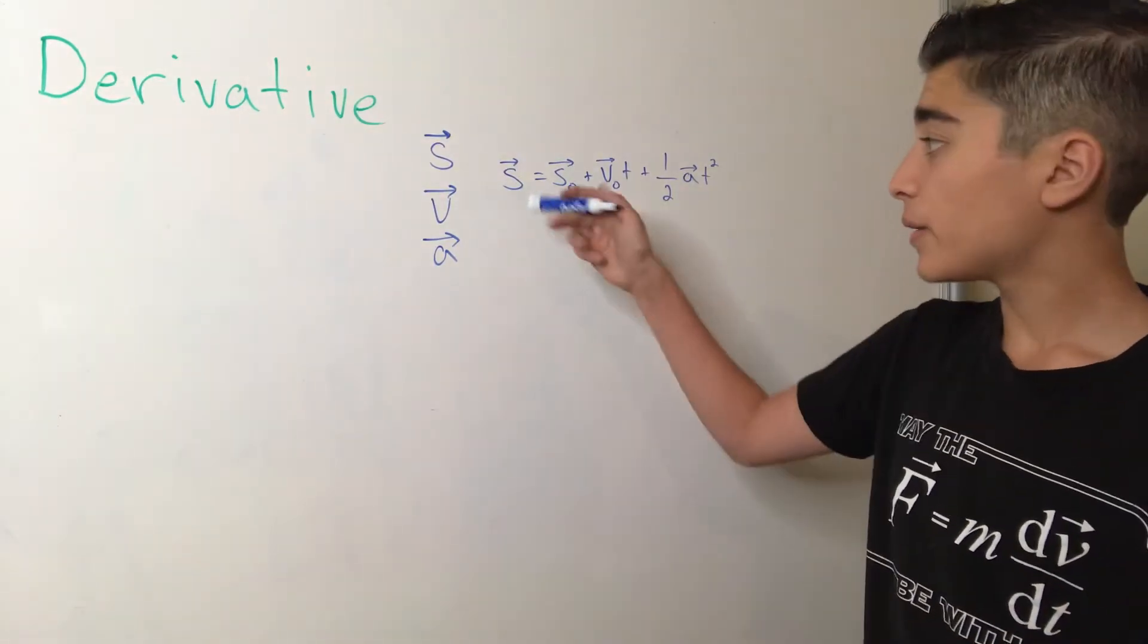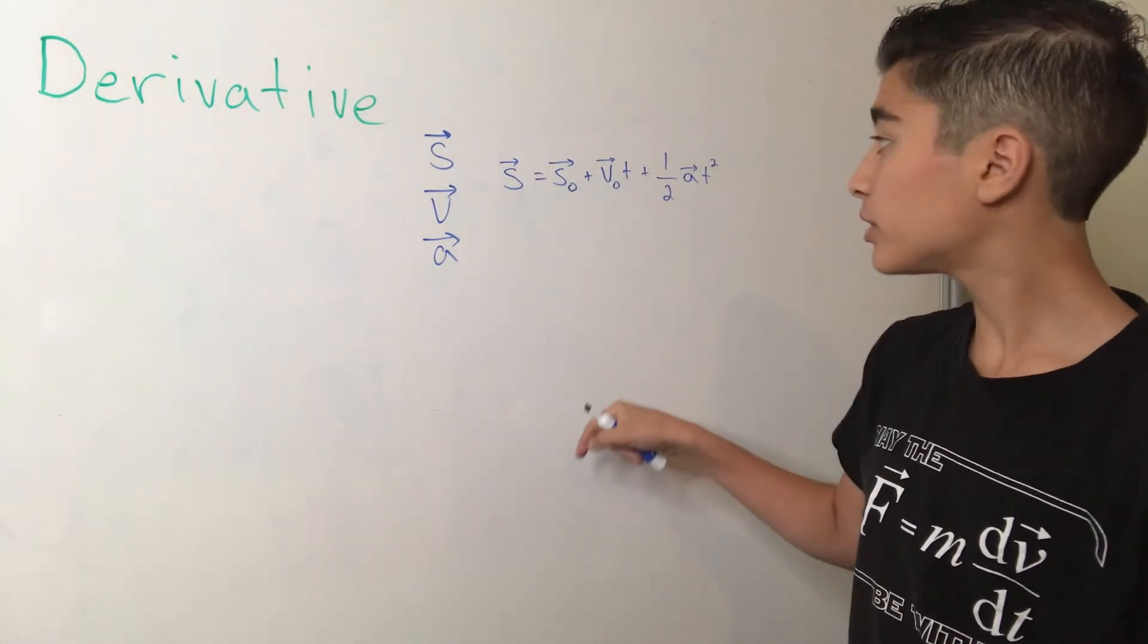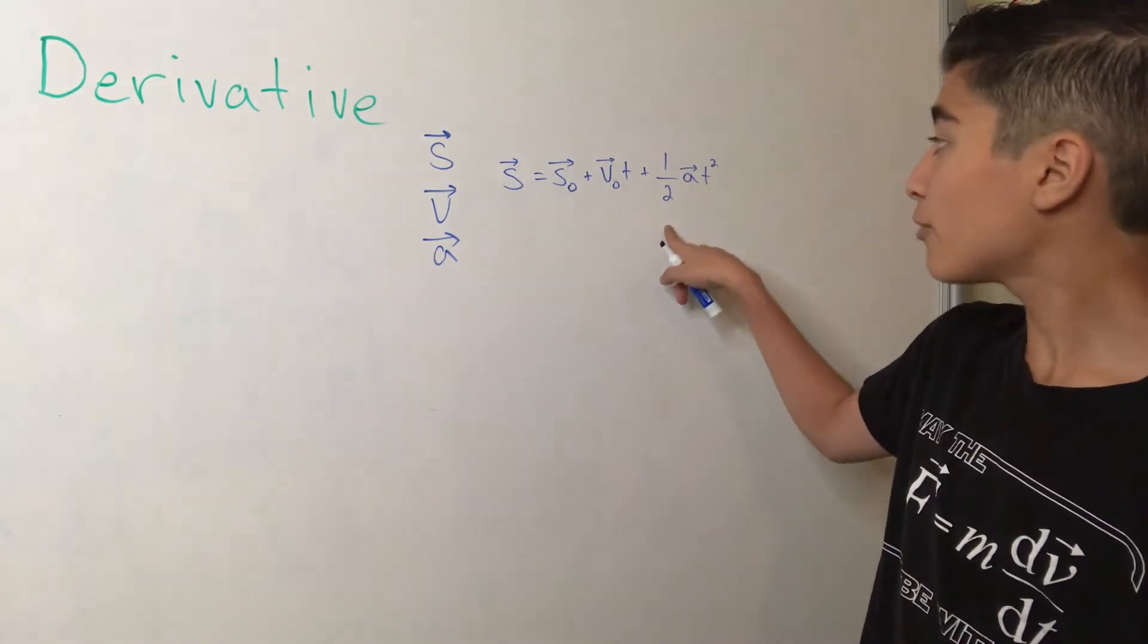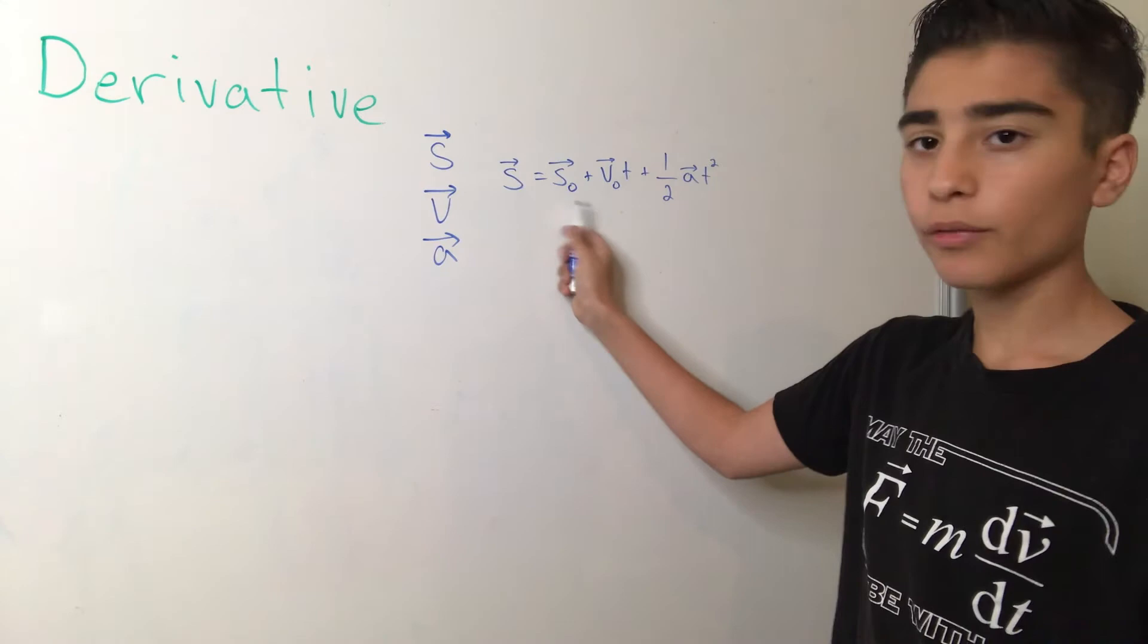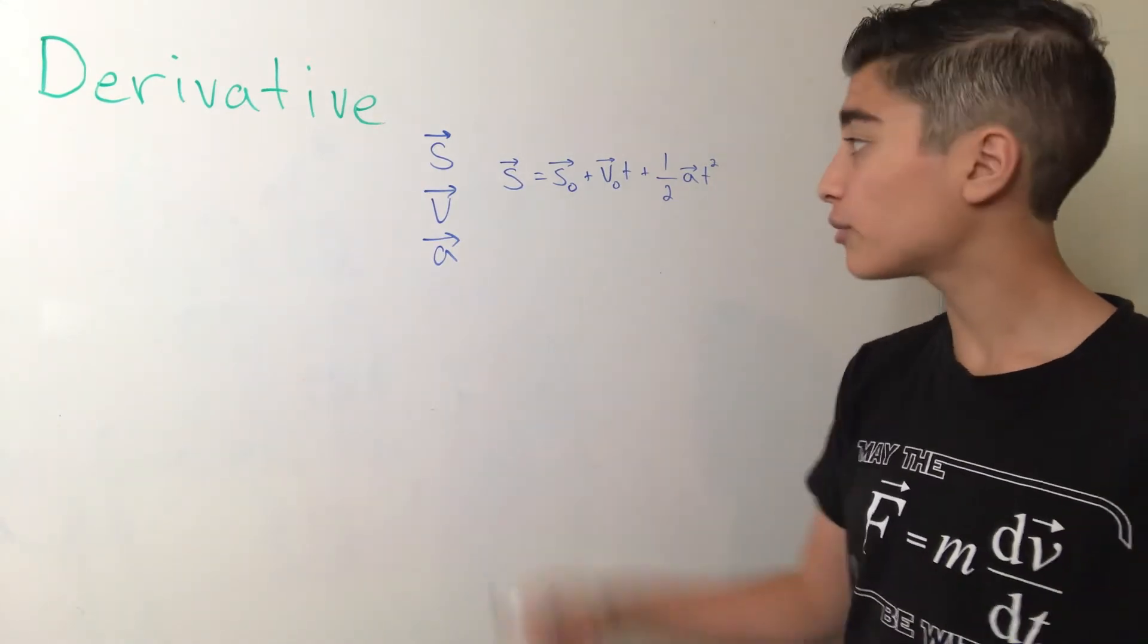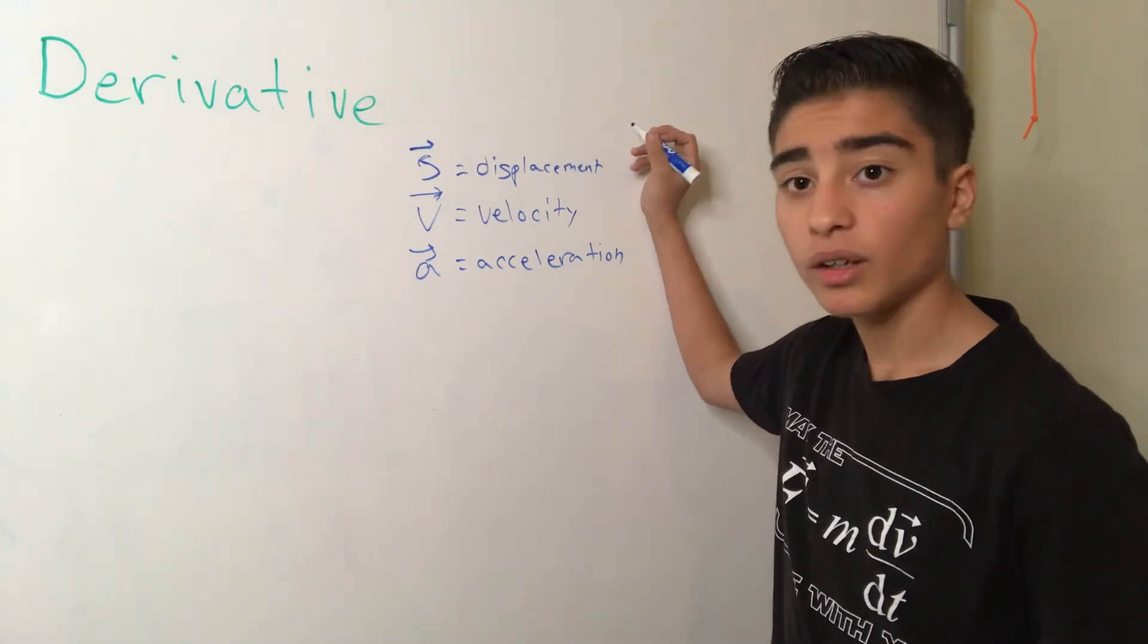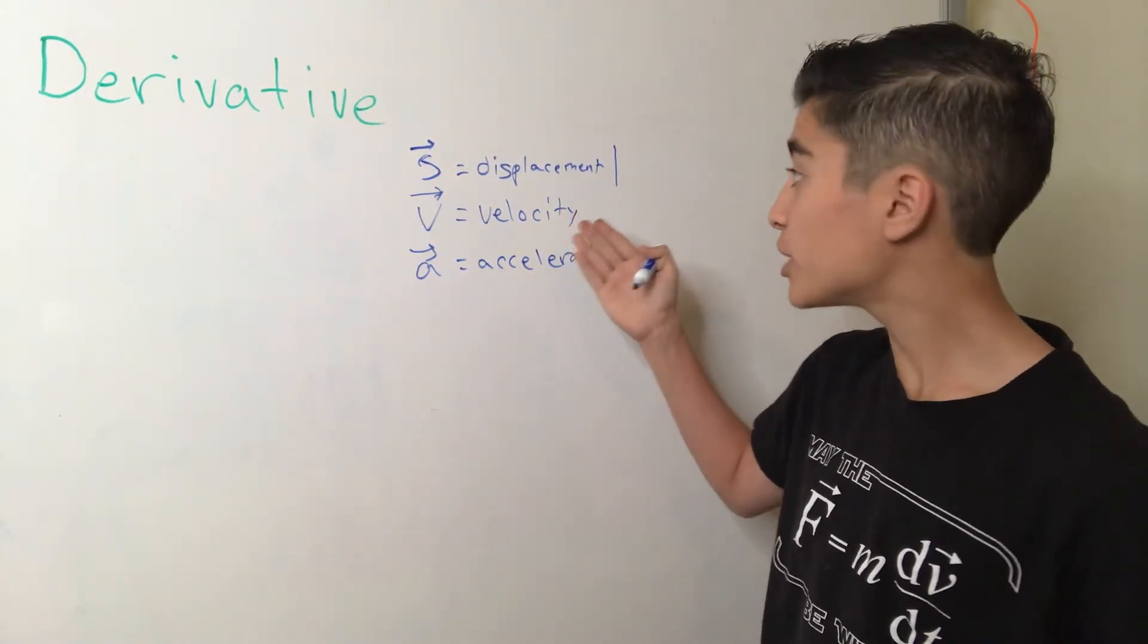This formula tells us that the total displacement is equal to the initial displacement plus the initial velocity times time plus 1 half times the acceleration times time squared. These little zeros over here just means it's how it started off. Now, think about this. When something is moving, that's telling us how much the position of that object is changing.